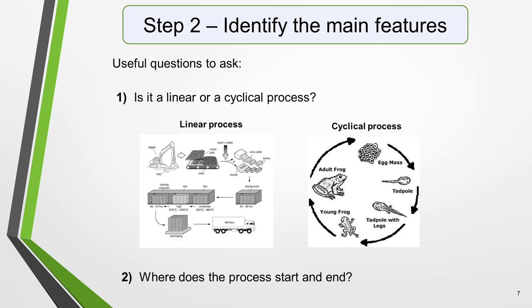An example of this can be seen in this diagram from a past process diagram question about the manufacture of bricks. A cyclical process, on the other hand, is a process that goes back to the beginning and repeats over and over again, such as the life cycle of a frog or a butterfly.